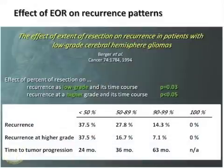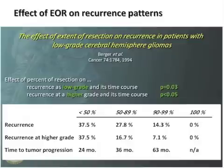From that original study I published in 1994, as you increase the percent of resection and get closer to 90 to 100 percent, the likelihood of recurrence not only decreases, but the likelihood of recurrence at a higher grade also proportionately decreases — showing how the natural history can be affected by extent of resection.